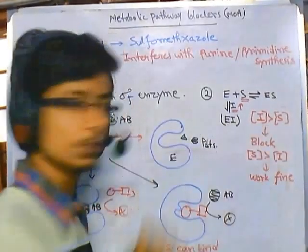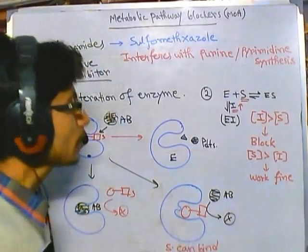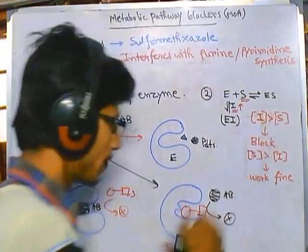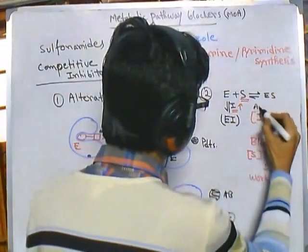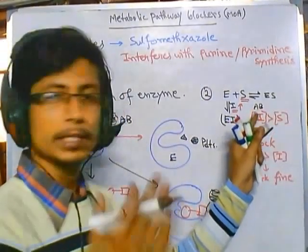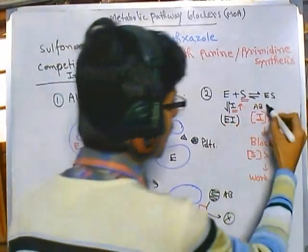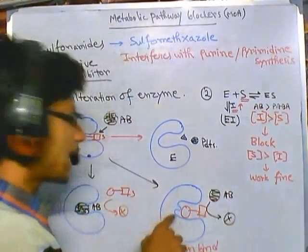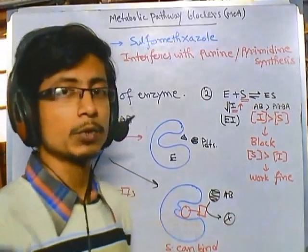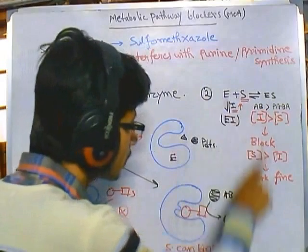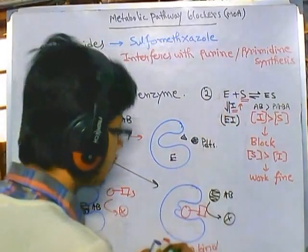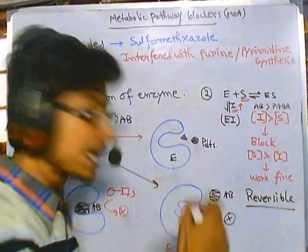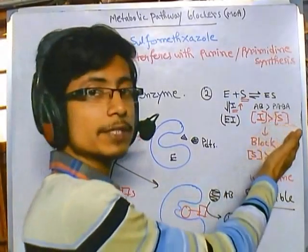But if the substrate concentration is higher than the inhibitor concentration, the enzyme will work fine. In the case of sulfonamides, the antibiotic acts as the inhibitor. When antibiotic concentration is higher than PABA and the other substrates inside the cell, the antibiotic blocks the active site of the enzyme. However, competitive inhibition is reversible in nature.